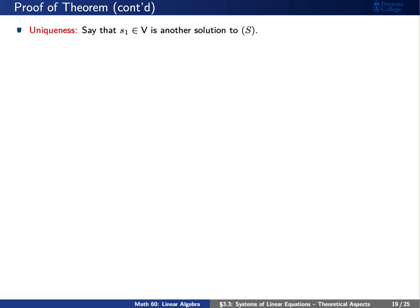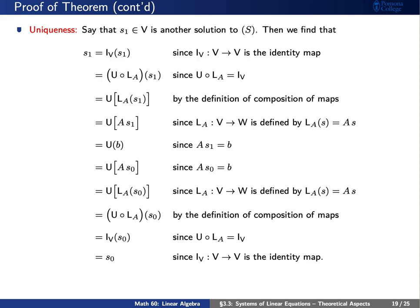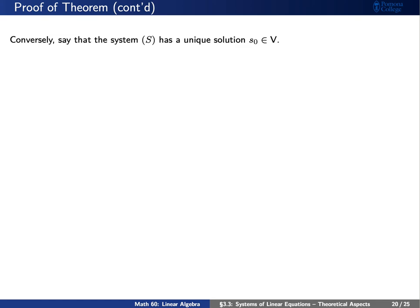Now for uniqueness, suppose s one is any other solution to system capital S. Using the fact that the identity map equals U composed with left multiplication by A, and substituting that A times s one equals B equals A times s zero, we work backwards to conclude s one equals s zero. So there is at most one solution. We've shown that if A is invertible, then system capital S has a unique solution s zero.